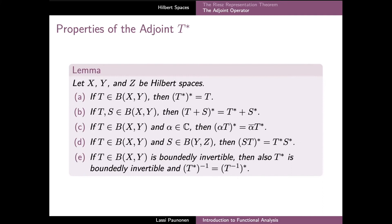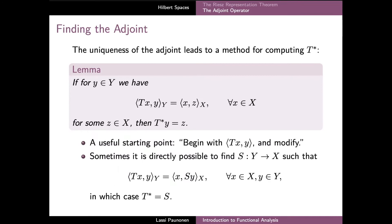The adjoint of a bounded operator satisfies several nice identities and computation rules for sums, scalar multiplications, and compositions of operators. These properties, as well as the inner product identity in the definition, may look very familiar as the basic properties of a conjugate transpose of a matrix. Indeed, if we interpret an m by n matrix as a mapping from the Euclidean space C^n to C^m, then its adjoint is precisely the mapping which corresponds to the conjugate transpose of this matrix.